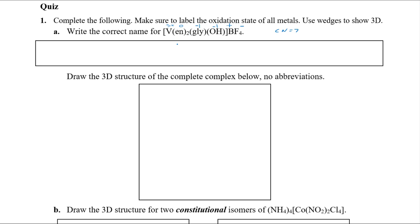For the name, put the ligands in alphabetical order — do not use prefixes when ordering. You have ethylenediamine (e), glycinato (g), and hydroxo (h), so ethylenediamine comes first. There are two of them, and when you have a bidentate ligand you must use the special prefixes. Many of you are not taking the time to learn those rules. If there are two bidentate ligands, we call it 'bis' — not 'bi' or 'di.' Put bidentate ligands in parentheses.